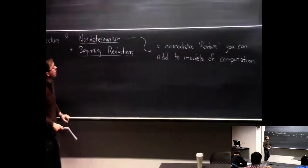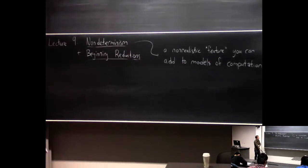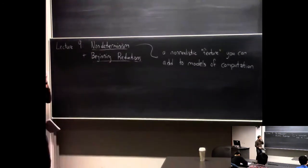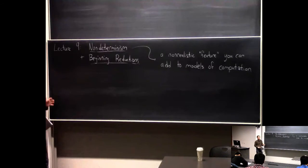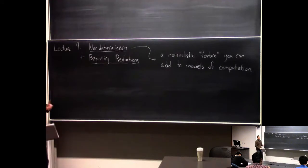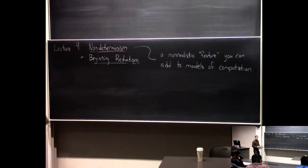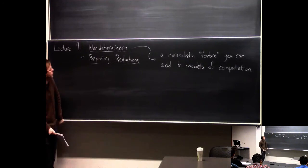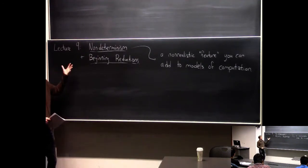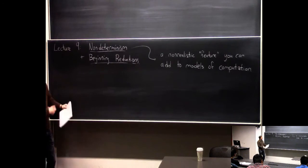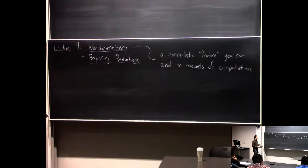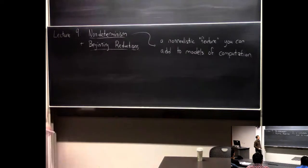Today's lecture covers two separate topics. In the first half, I want to tell you about non-determinism, and in the second half, we'll start talking about reductions. Non-determinism is a topic I wasn't even sure I was going to discuss, because we already defined NP in terms of polynomial time verifiers. Originally, NP was defined in terms of this concept called non-determinism — that's what the N in NP stands for.